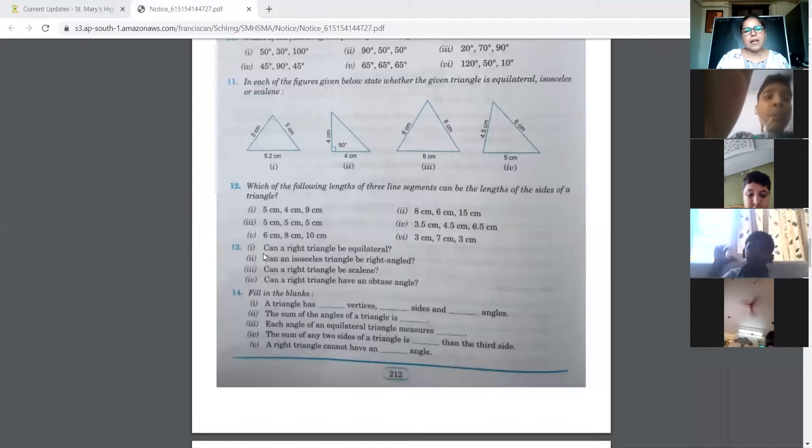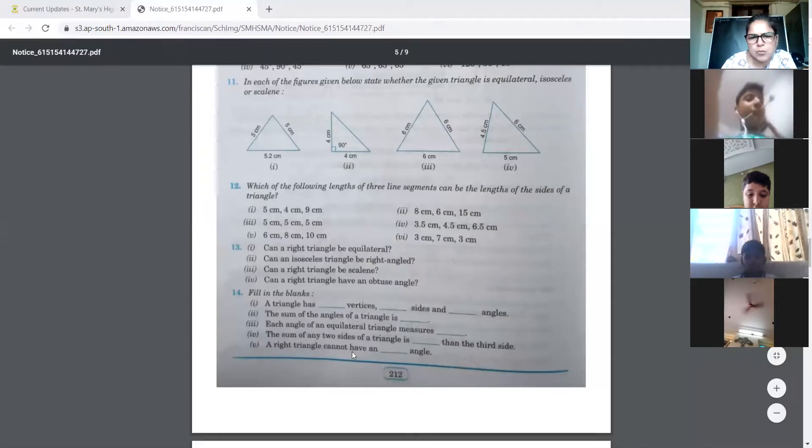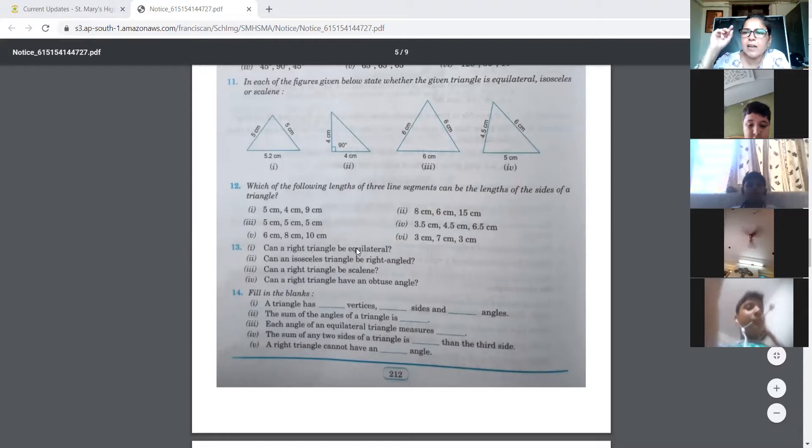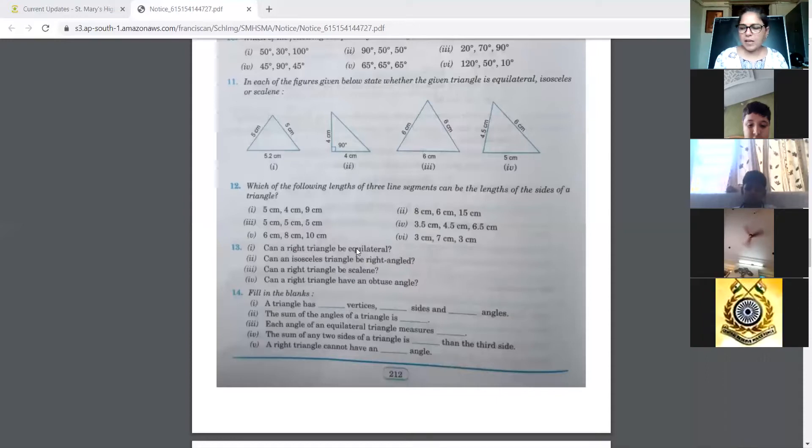Then can a right angled triangle be equilateral? So this is not possible because we know that in an equilateral triangle not only are the sides the same but also the angles are same. So if all the angles are same, they are all equal to 60 degrees, because 60 times 3 is 180 degrees. So here it will be a no.